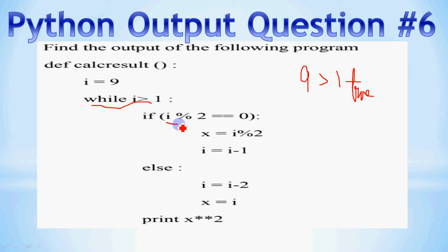So 9 modulo 2 is not equal to 0. So this is not equal to 0, so this condition is also false. So we go to else. Else, i is equal to i minus 2. Right hand side of the equation, you will have to evaluate the result. So i was 9, now i ki value change ho kar 7 ho jayega. So now i becomes 7 because 9 minus 2 is 7.